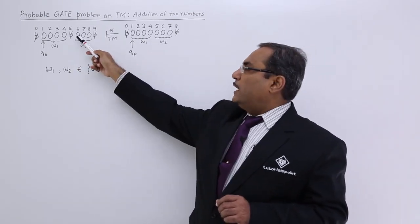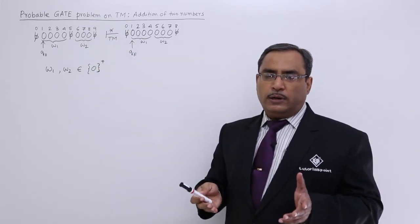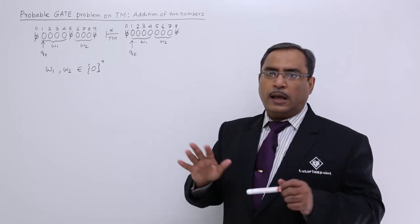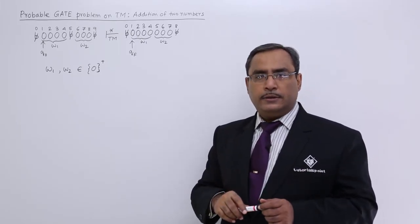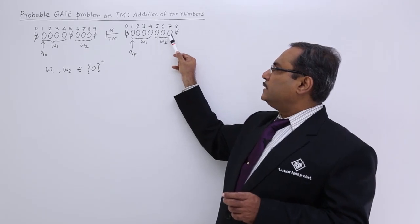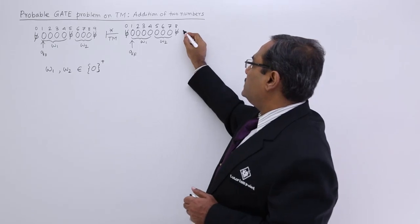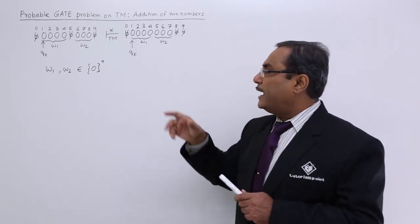Then we shall pass through this W2. We do not know how many zeros are there, what is the length of W2. We are not having any idea, we are totally blind in that aspect. So what we shall do? We shall move up to this 9. Obviously there is another blank space if you want to do this one. So we shall move up to 9.